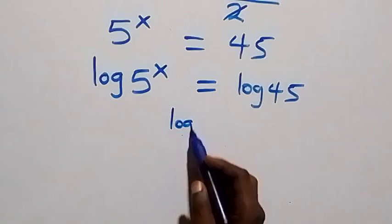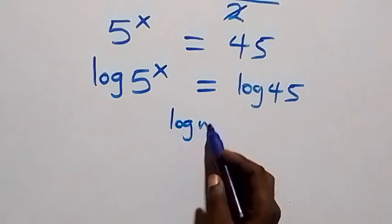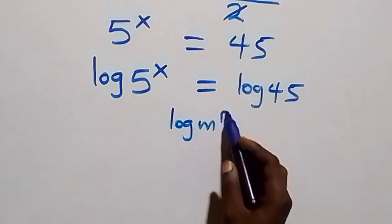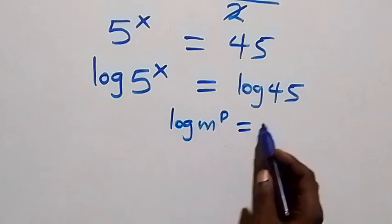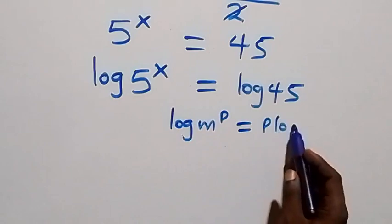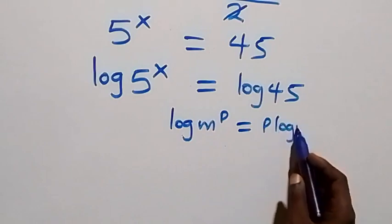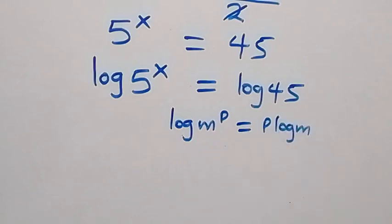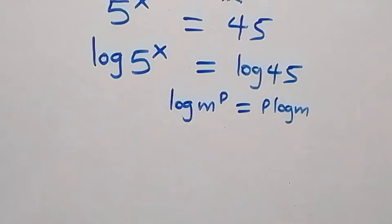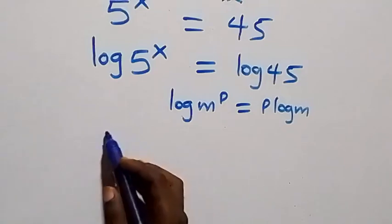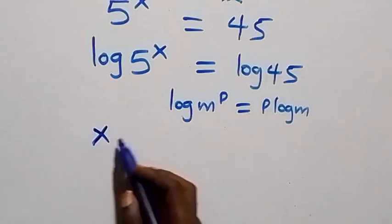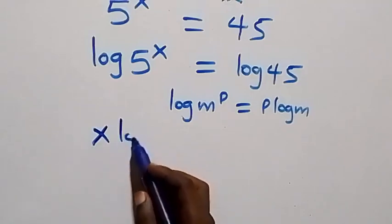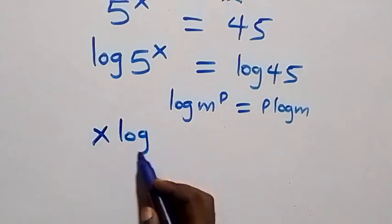From here we apply the power rule of logarithm: log m raised to power p is the same thing as p log m. Then what we have here becomes x log 5...